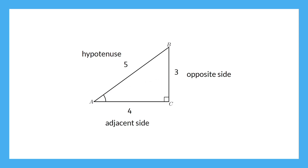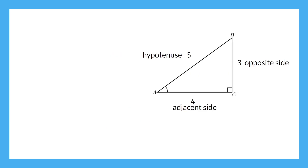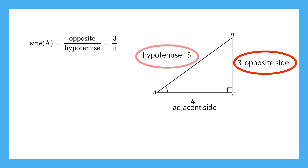We're going to identify our trig ratios for angle A first, so let's keep our sides labeled just like this for now. Sine, cosine, and tangent represent the ratios of the sides of a right triangle. Let's define these ratios for angle A. The sine of an angle is the opposite side over the hypotenuse. For angle A, the opposite side is 3 and the hypotenuse is 5, so the ratio is 3 over 5.